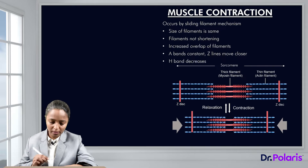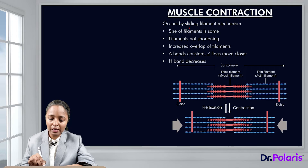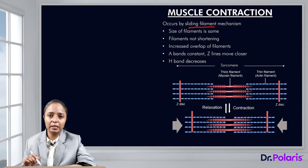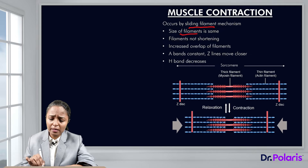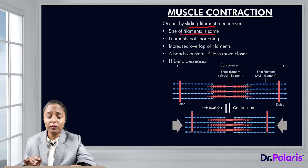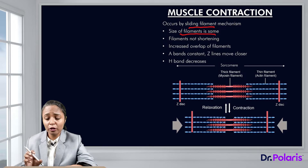Contraction occurs by the mechanism of sliding filaments. That means the myofilaments present in the skeletal muscle fiber slide on each other. Fundamentally, the size of the filaments remains the same despite the shortening of the muscle fiber.